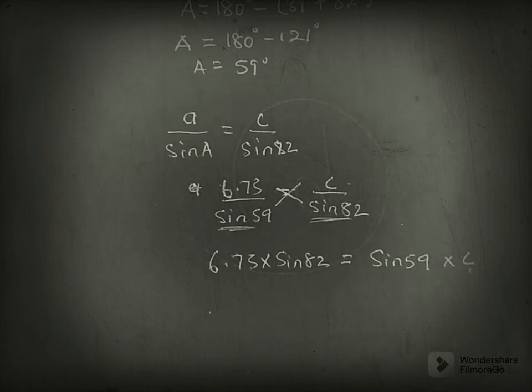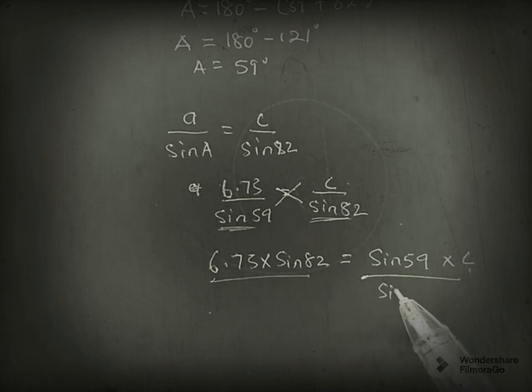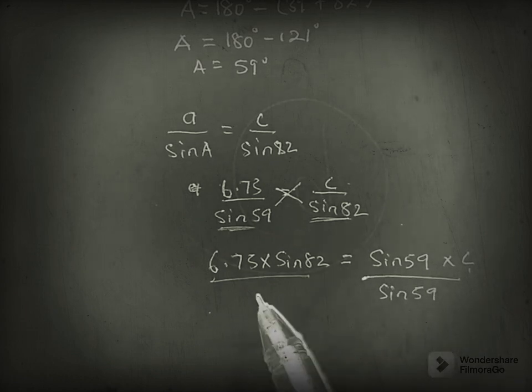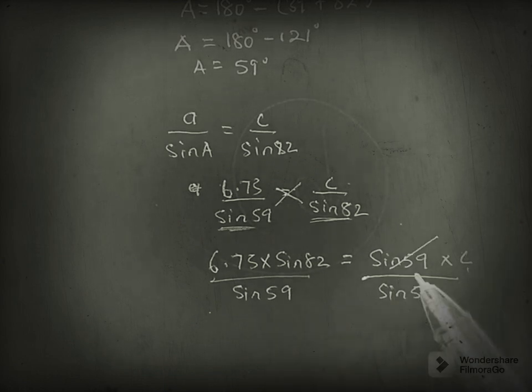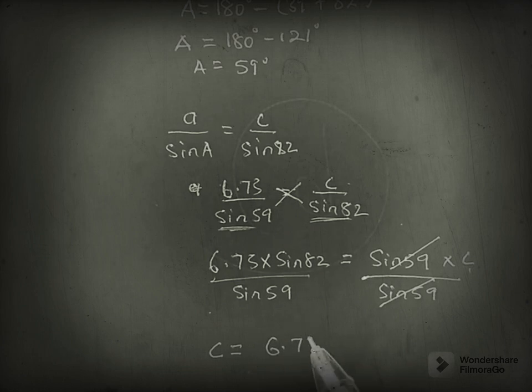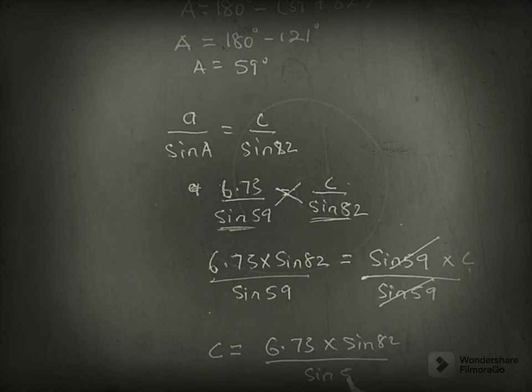By dividing both sides by sin 59, such that this will cancel out, we have c equals 6.73 times sin 82 over sin 59.